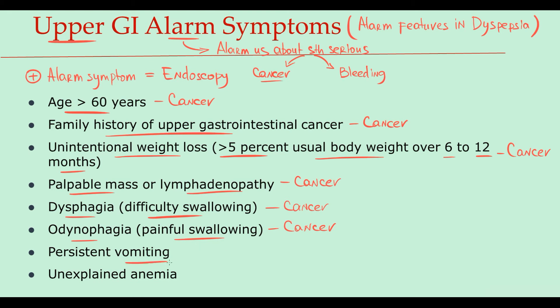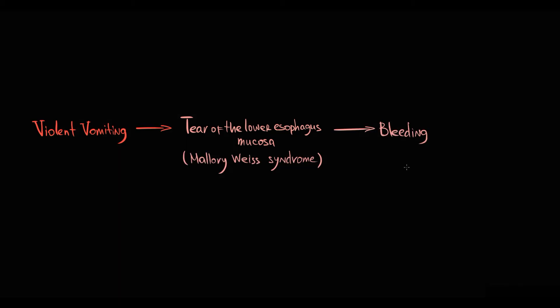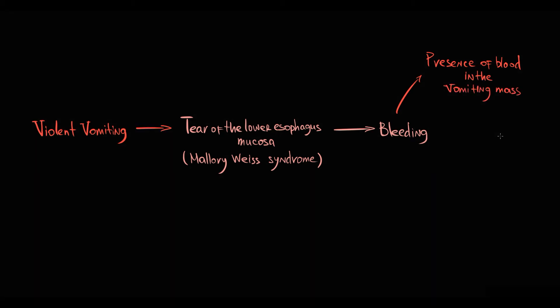Another alarm symptom is vomiting. Vomiting can be functional, or it can be caused by some organic pathology. For example, violent vomiting from any cause can cause a tear of the lower esophageal mucosa, and this will cause bleeding — a condition known as Mallory-Weiss syndrome. Bleeding combined with vomiting will manifest as the presence of blood in the vomiting mass, and this is actually a characteristic symptom of Mallory-Weiss syndrome. So presence of blood in the vomiting mass is a direct indication for upper endoscopy, because the first priority is to determine the source of bleeding and stop it.